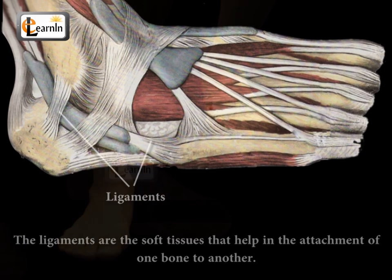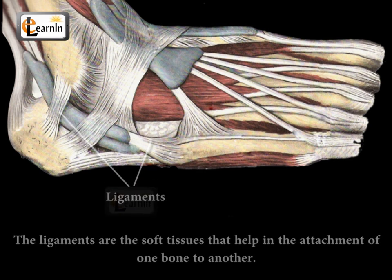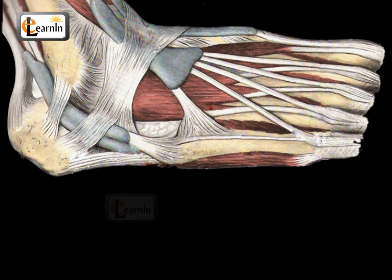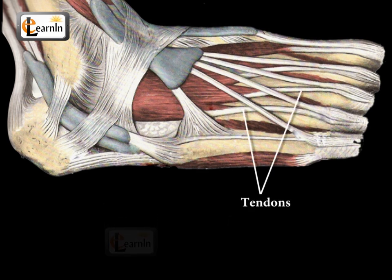The ligaments in the foot are the soft tissues that help in the attachment of one bone to the other. These are similar to tendons. The only difference is that tendons attach muscles to bones.